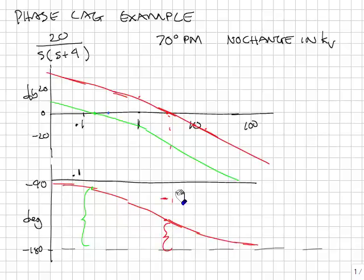The solution in this case is to use a phase lag. And we use a phase lag to decrease the gain of the system without affecting the DC gain.